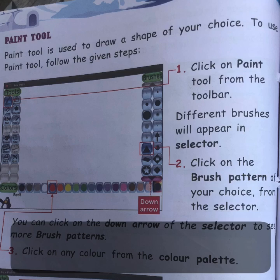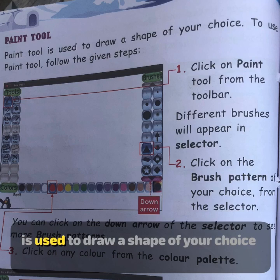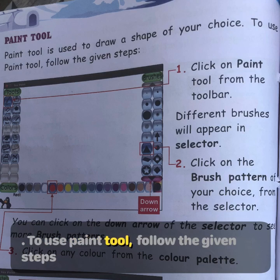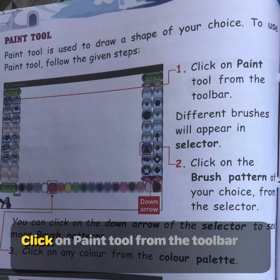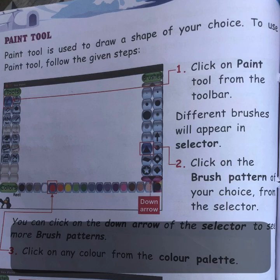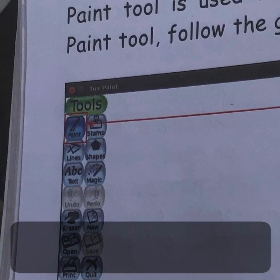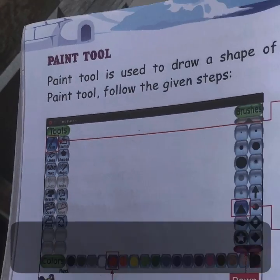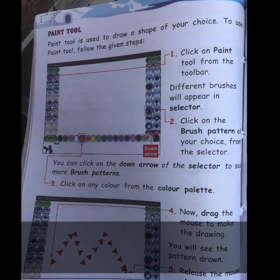Next is the Paint Tool. The Paint Tool is used to draw a shape of your choice. To use the Paint Tool, follow the given steps. First, click on the Paint Tool from the toolbar. We will now click on the Paint Tool.